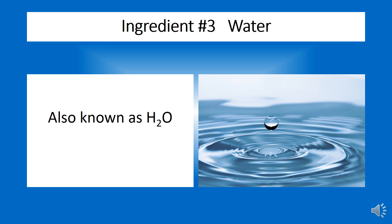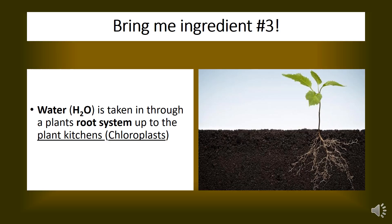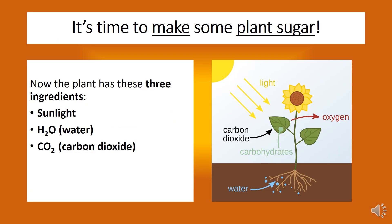The third ingredient needed for photosynthesis is water, H2O. A plant acquires the water needed for photosynthesis with the help of its trusty root system. Now the plant has all three ingredients in its kitchen — the chloroplasts — that's needed for photosynthesis: sunlight, water, and carbon dioxide.